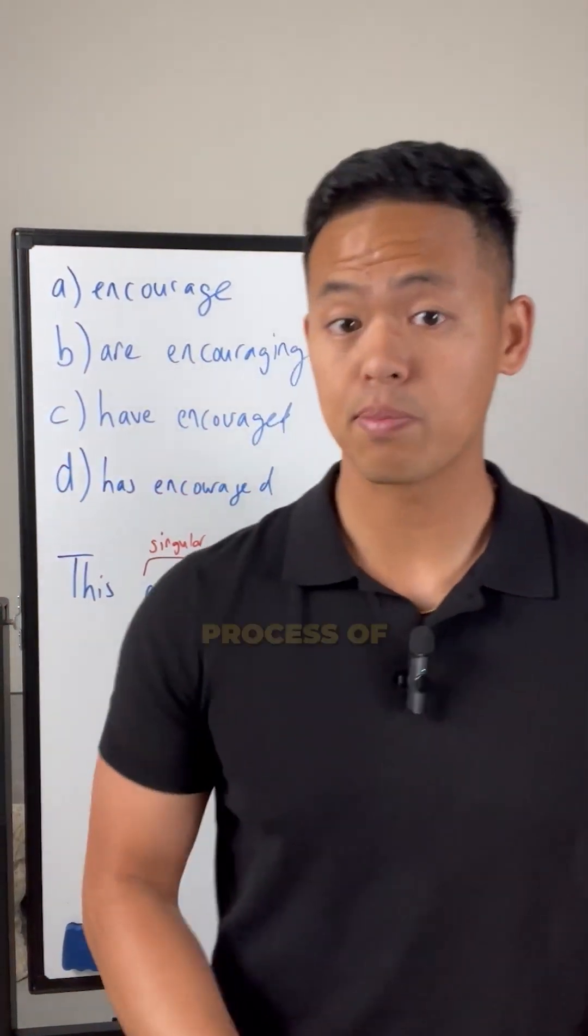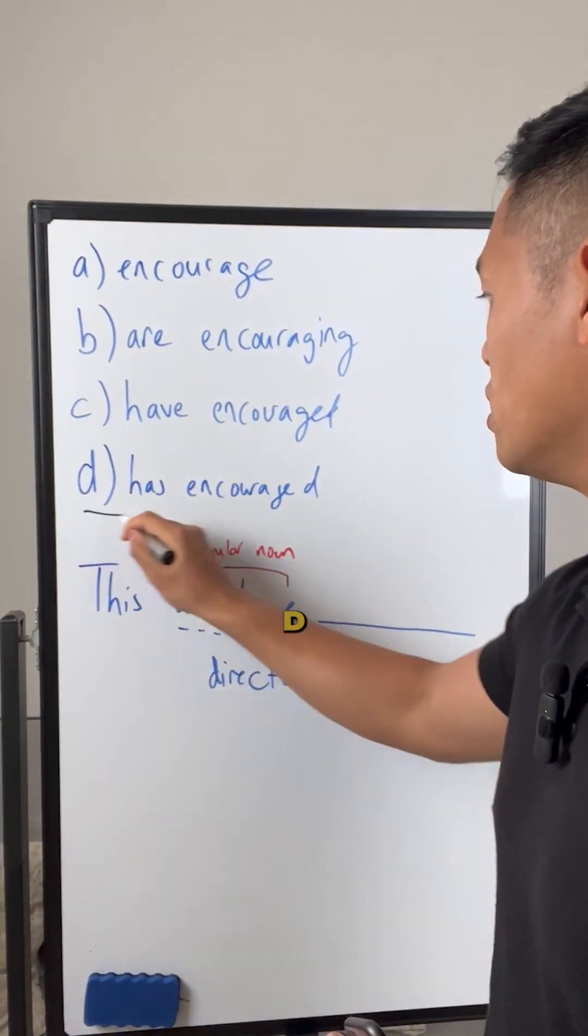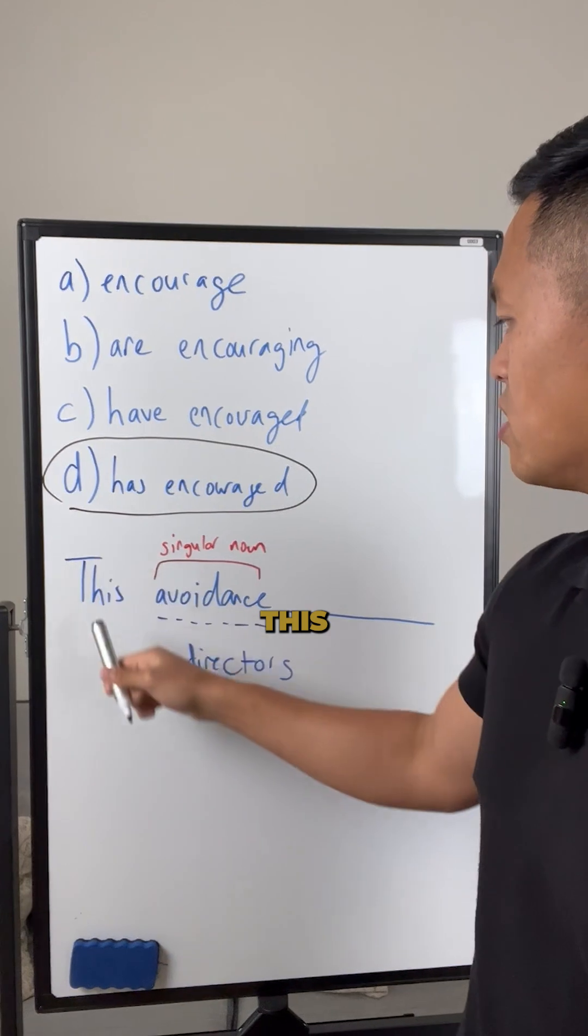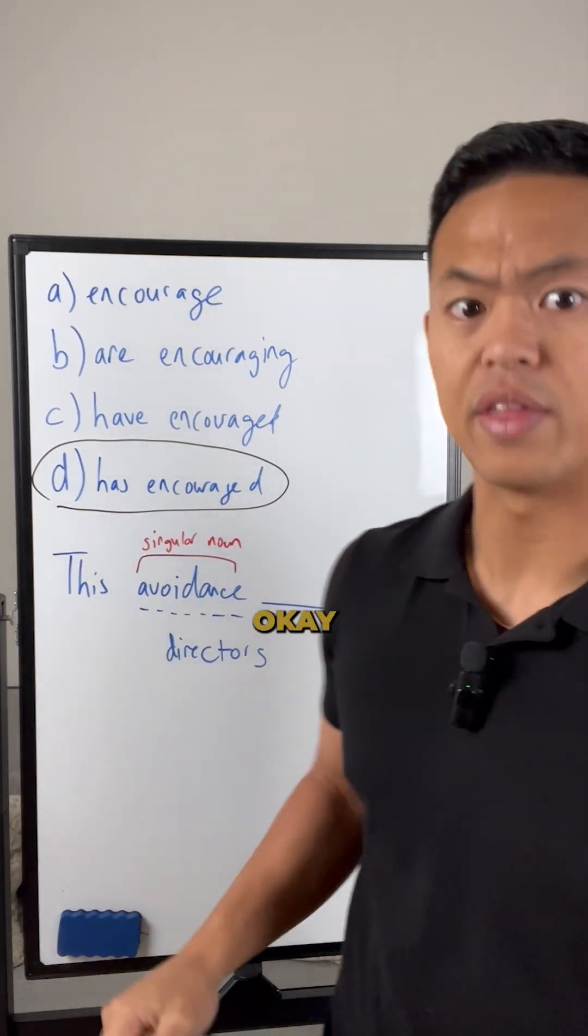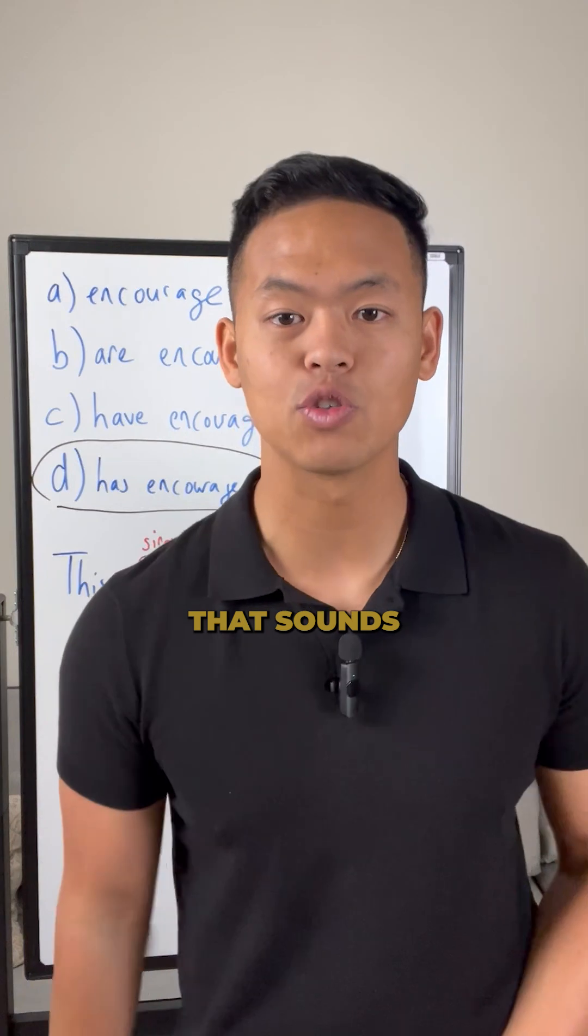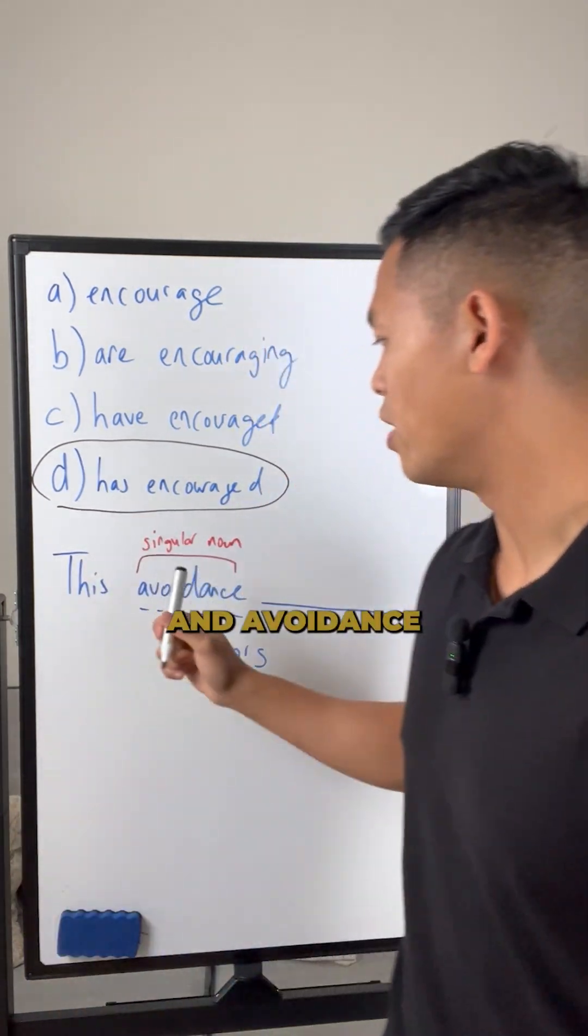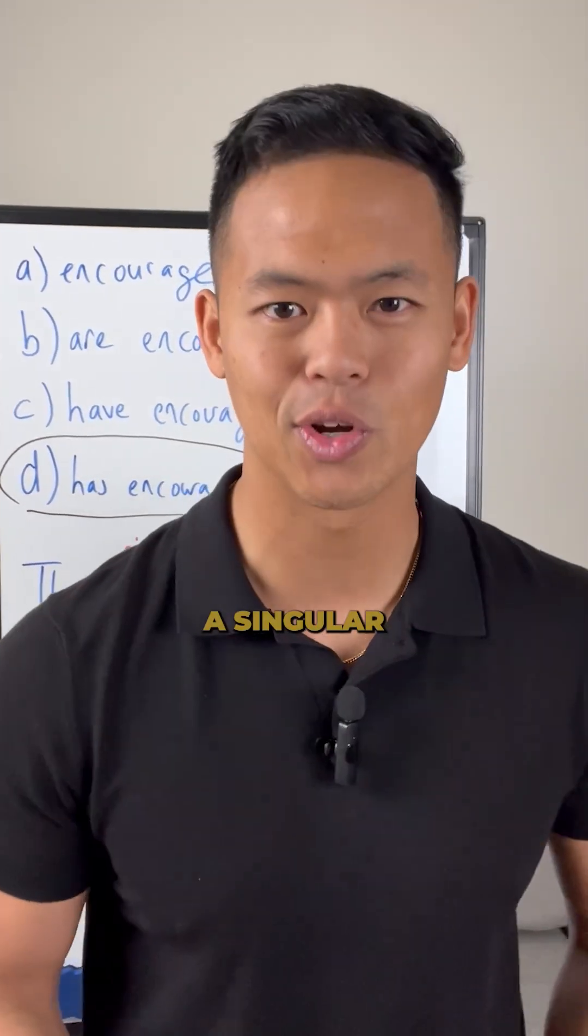The last one, just by process of elimination, D must be our answer. But if you want to prove it, just say this avoidance has encouraged. That sounds right because 'has' is for a singular noun, and avoidance is a singular noun.